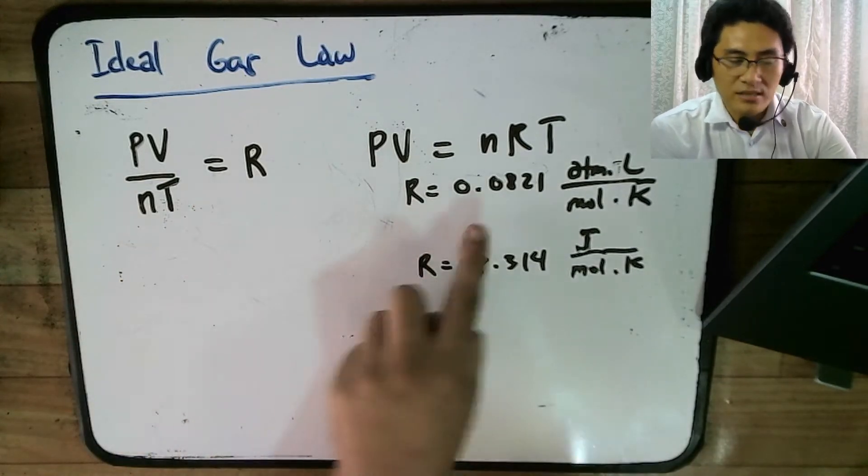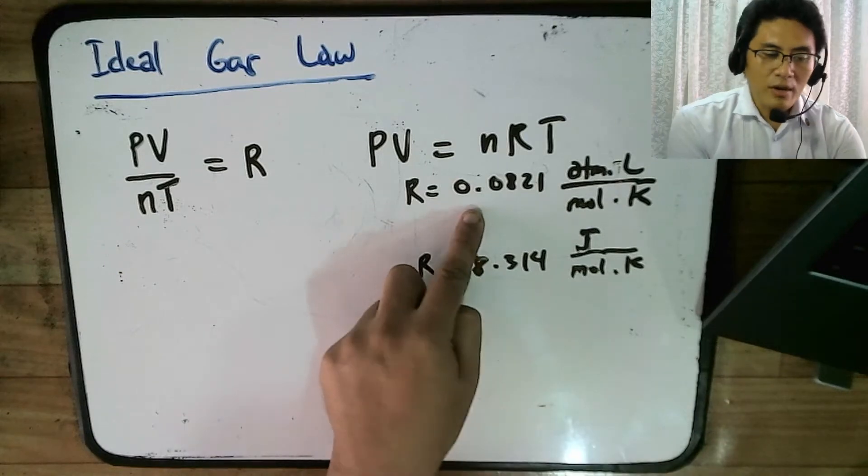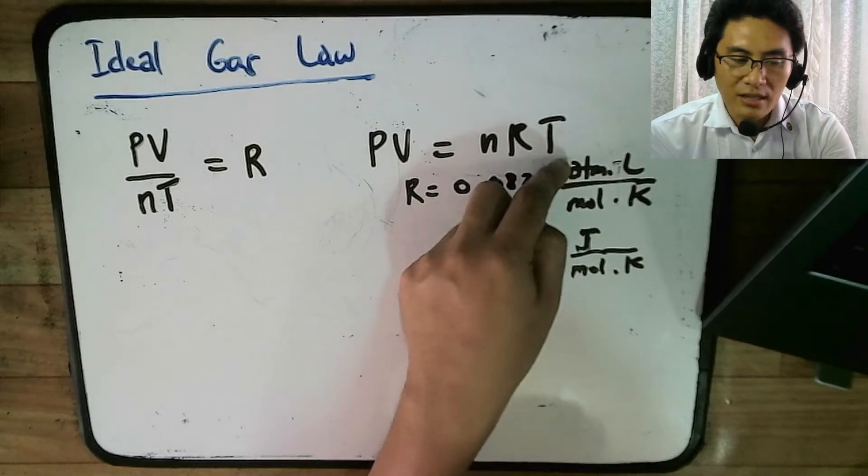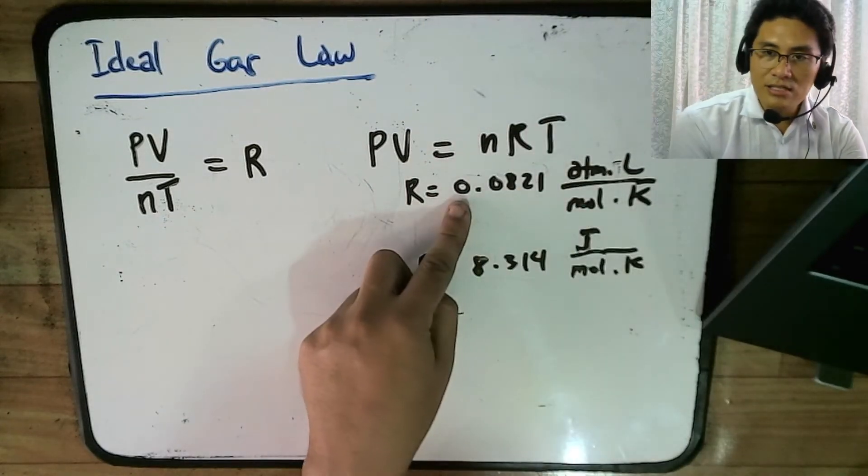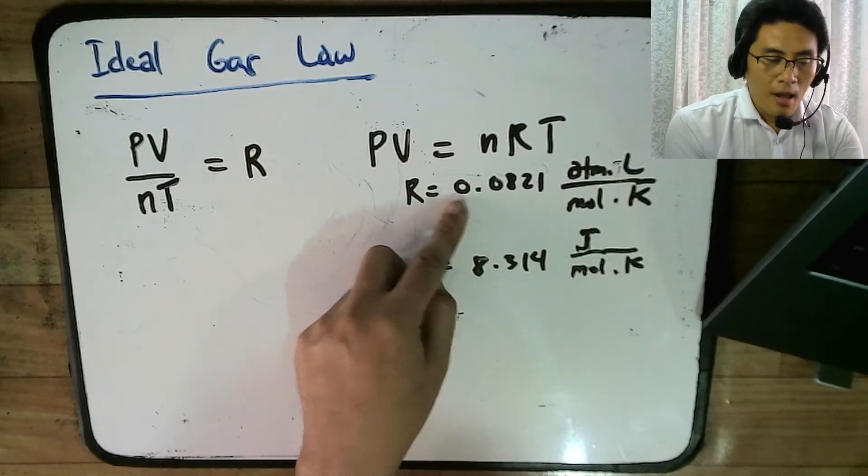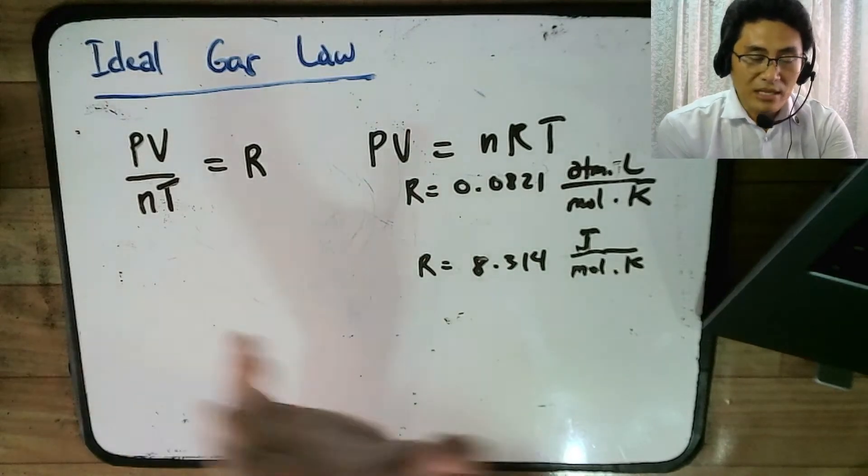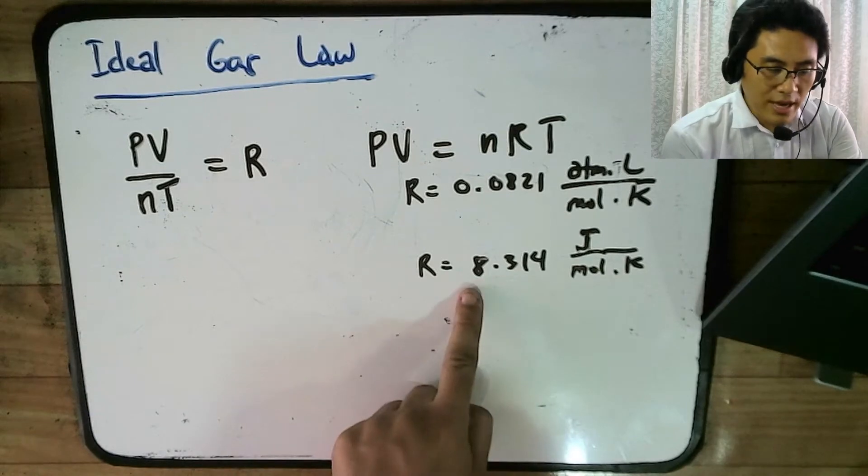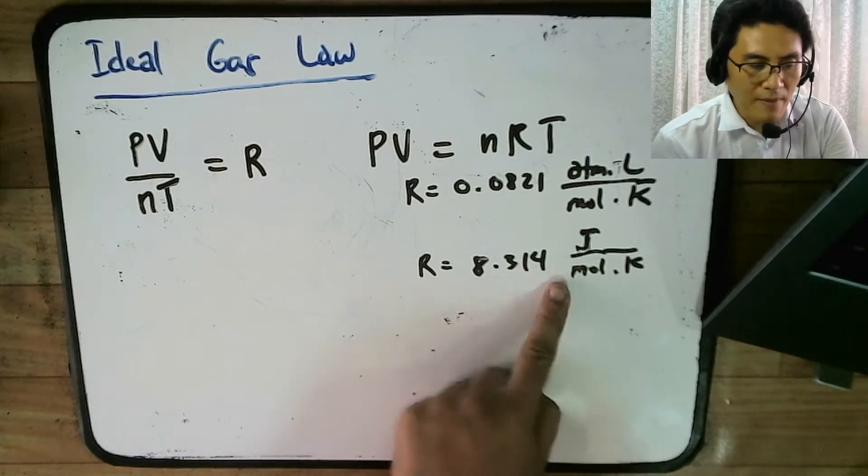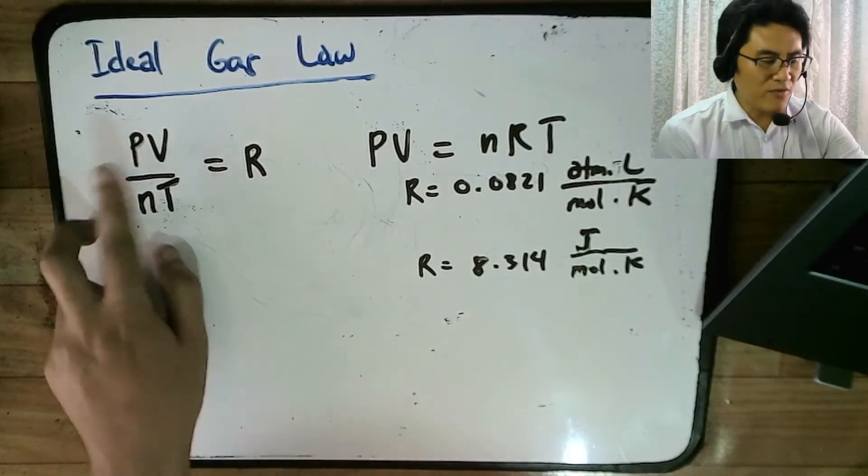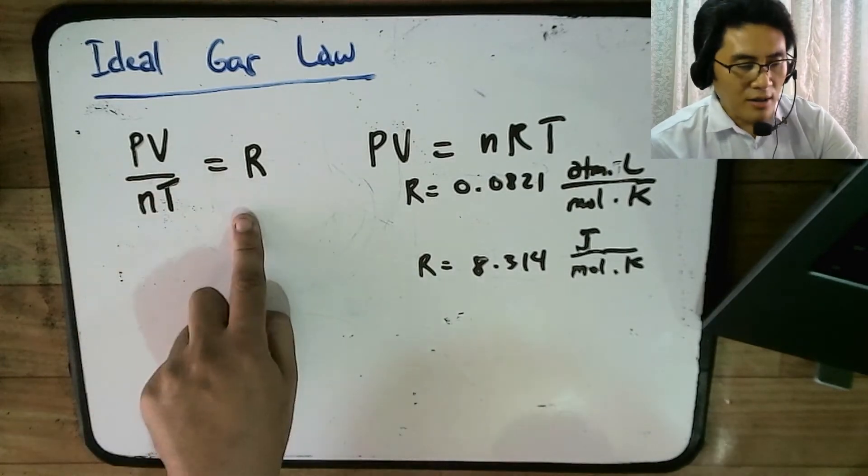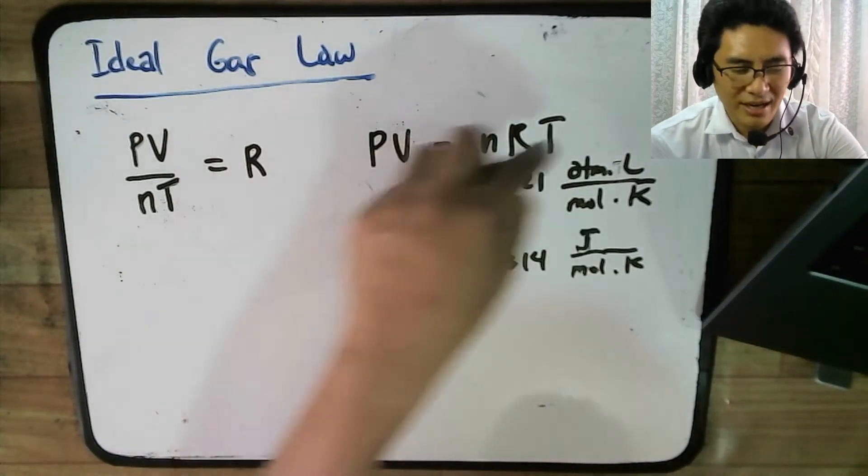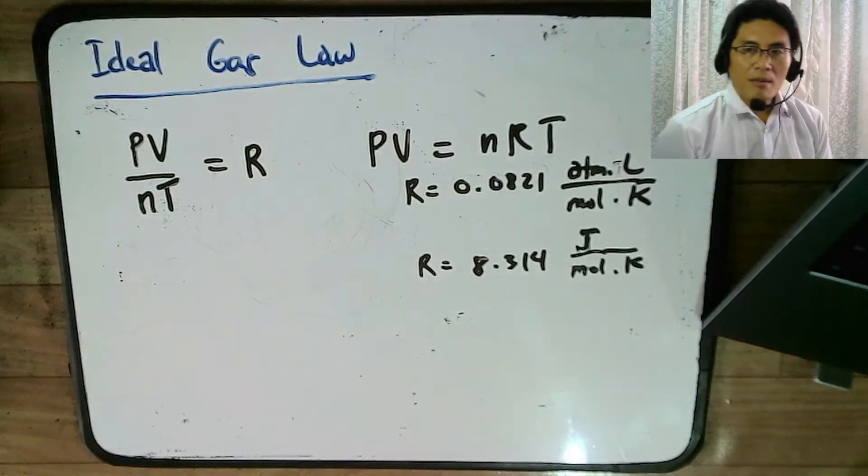And R again is a fixed number and it is 0.0821 atm liter mole Kelvin. But if you are using Pascal and meter cubed, then you will have this which is 8.314. And then again, this PV over NT is equal to R. This is usually written in other books as PV is equal to NRT because it's kind of easier to remember.